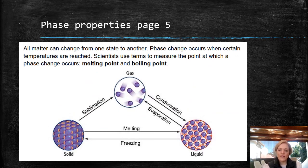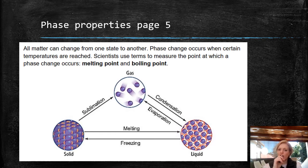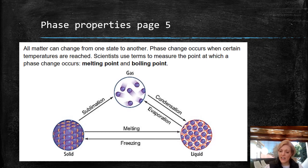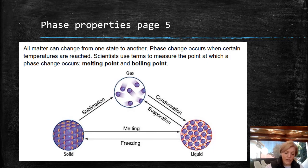I went ahead of myself in the previous slides and started discussing melting points and boiling points, so this slide should be easy. We discussed that all molecules can change from one state to another depending on temperature, and the phase change occurs when certain temperatures are reached. We use the terms melting point and boiling point. Liquids have molecules closer together with still some space; solids are tightly packed; gases are dispersed. Evaporation leads to gases, condensation leads to liquids, melting leads to a liquid, and freezing leads to a solid. Sublimation is the phase change directly from solid to gas — it skips the liquid phase. Please make a note of that in your booklets.